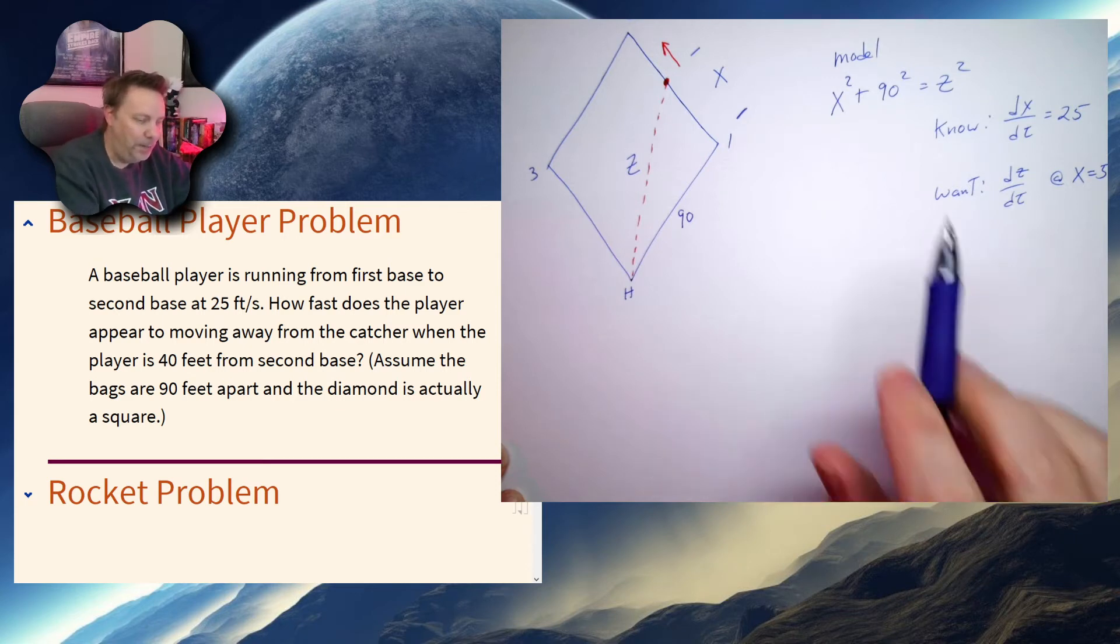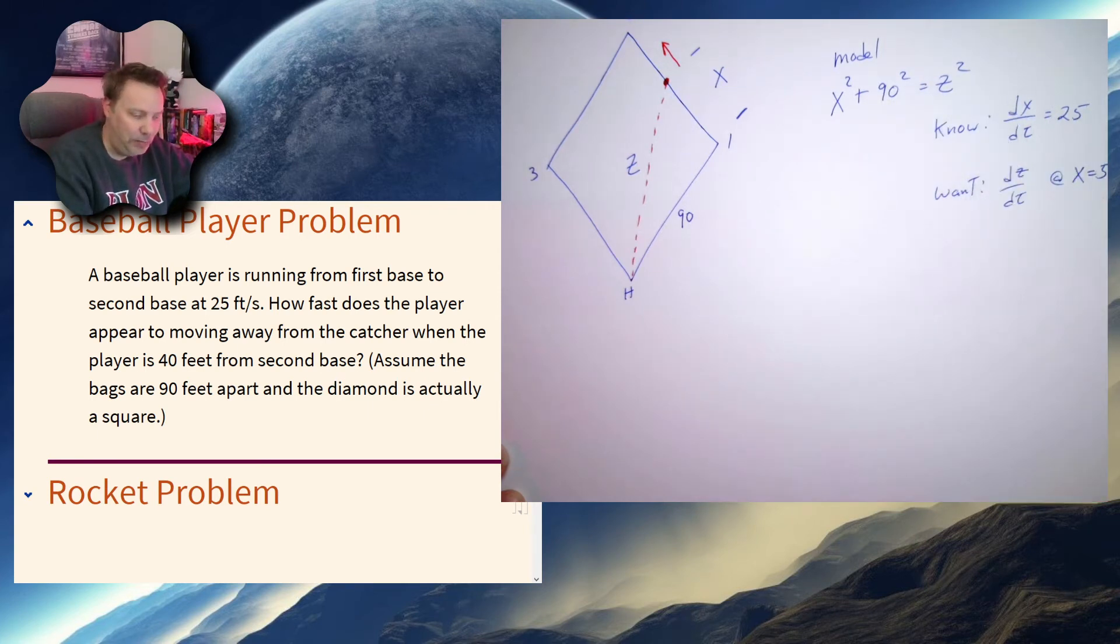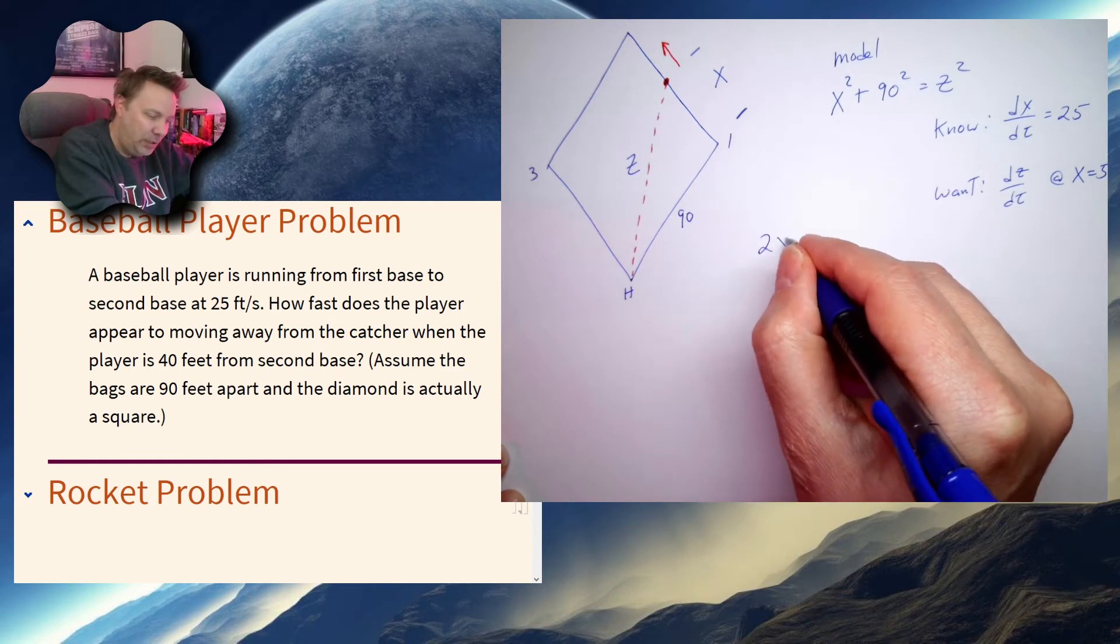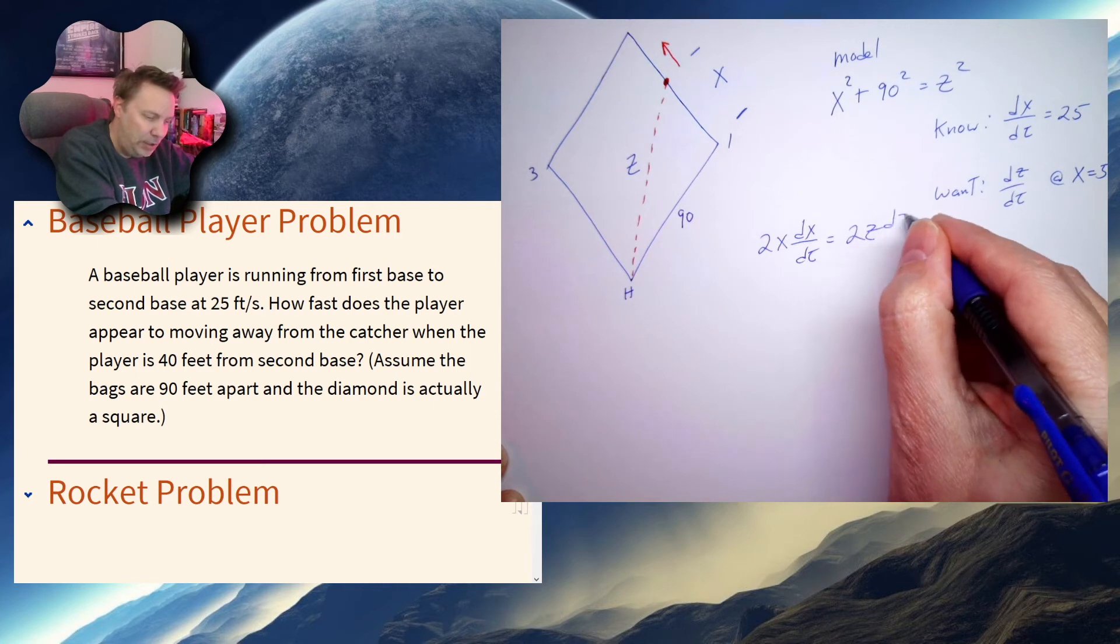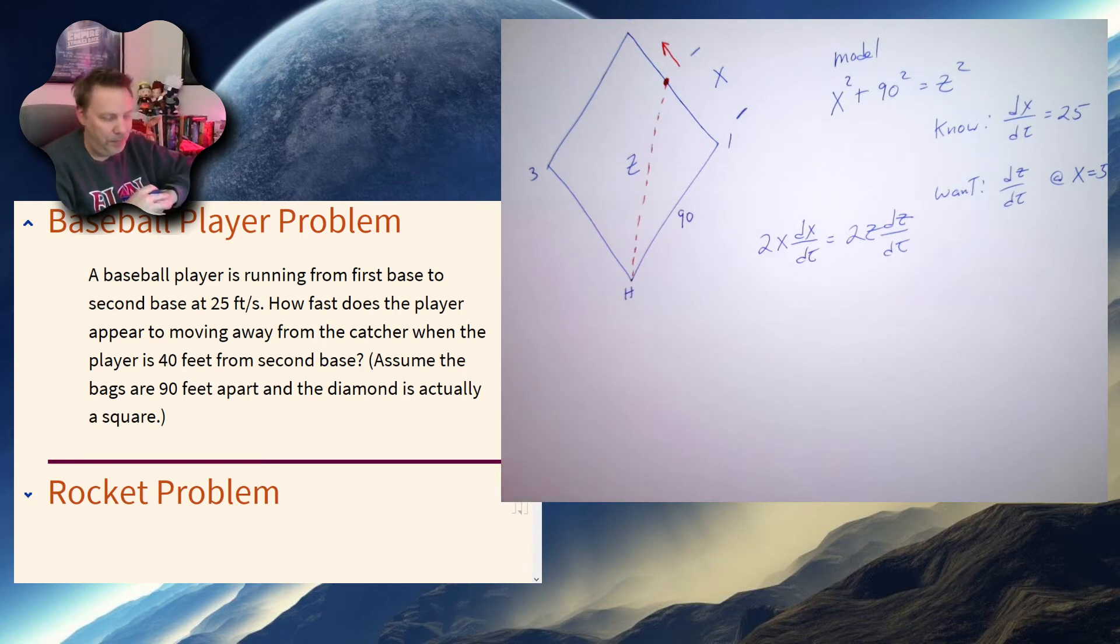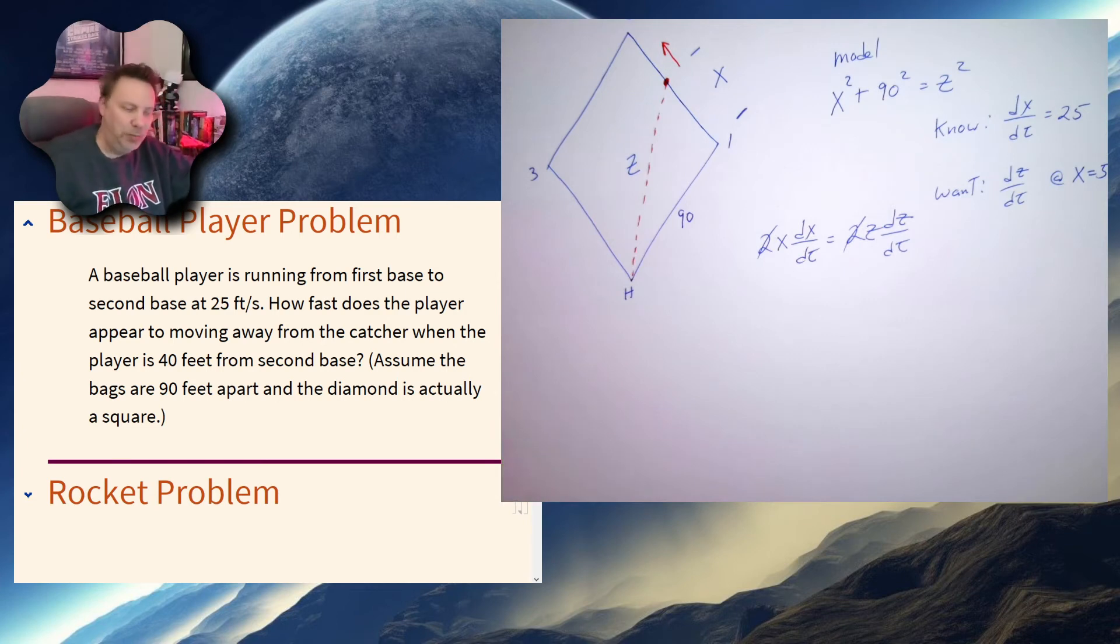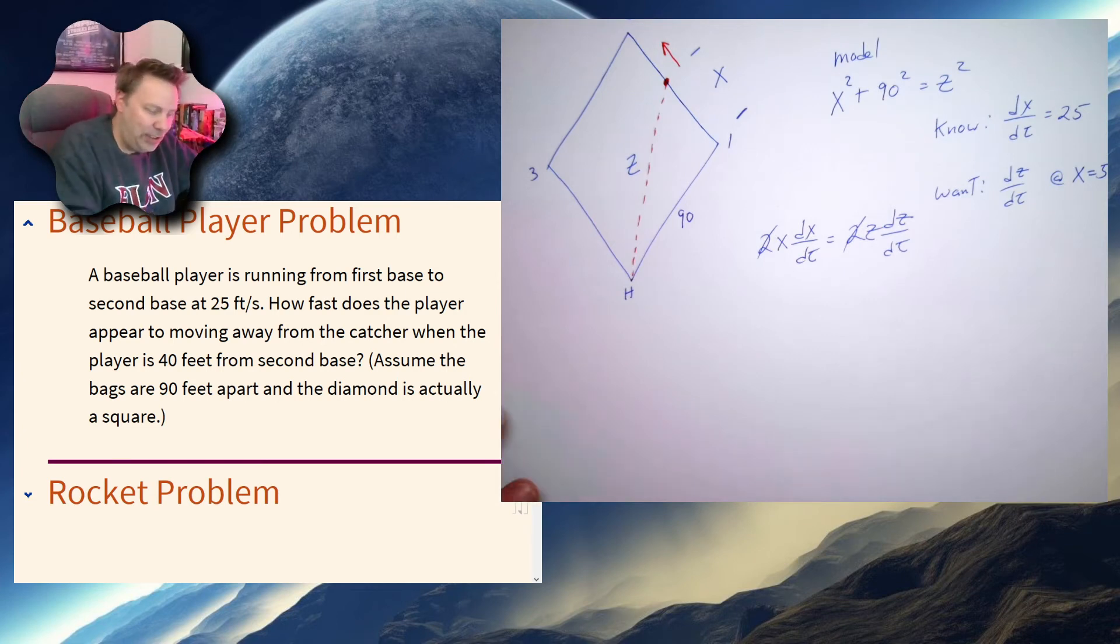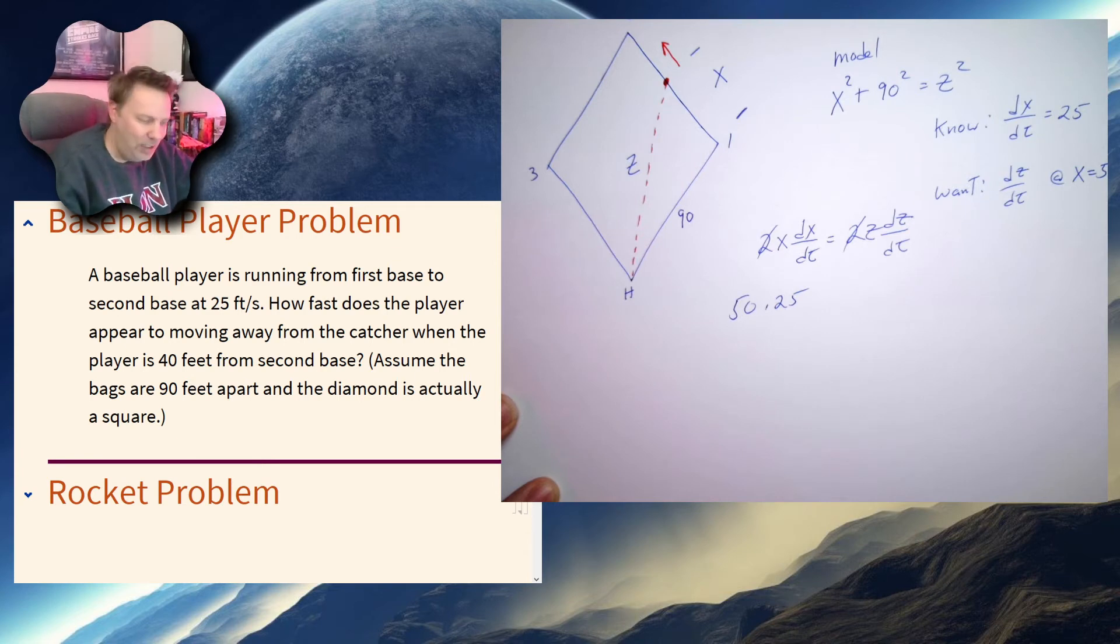So let's put some of this together here. I'm going to take a derivative of this and then I'm going to plug in my information. So 2x dx dt is equal to 2z dz dt. Remember the derivative of 90 squared is zero. So I can plug in certain things. Well, one thing, I'm just going to cancel the twos on both sides. So x is equal to 50, dx dt, well, that's 25. But what about z? How do we figure out z?